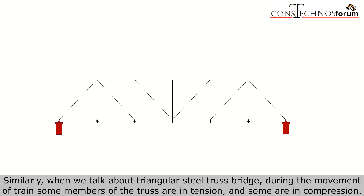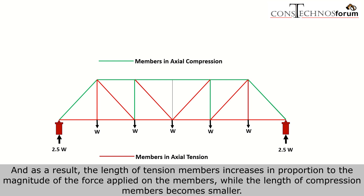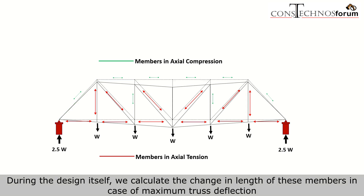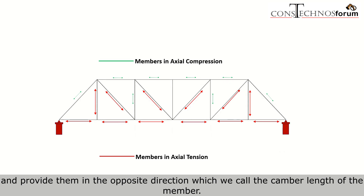Similarly, when we talk about a triangular steel truss bridge, during the movement of trains, some members of the truss are in tension and some are in compression. As a result, the length of tension members increases in proportion to the magnitude of the force applied, while the length of compression members becomes smaller. Due to this elastic deformation in the length of the member, the truss gets deflected downwards. During the design itself, we calculate the change in length of these members in case of maximum truss deflection and provide them in the opposite direction, which we call the camber length of the member.